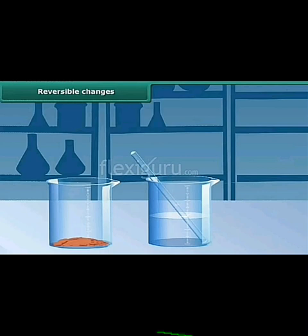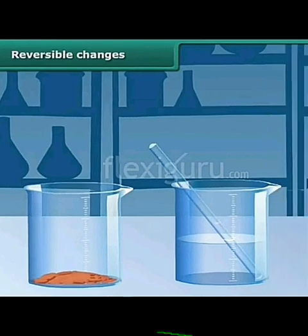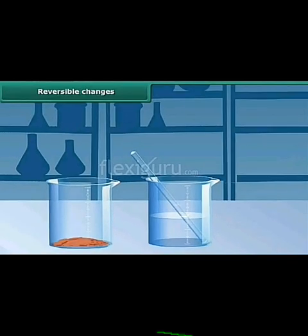Let us take an example of reversible changes. I have sand in a container and I try to mix the sand in water. But sand is insoluble in water, so it settles down at the bottom of the container. When it settles, I tilt the clear water to the next container. This process is known as sedimentation along with decantation, and it is an example of reversible change, because we have separated water from the sand.